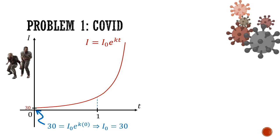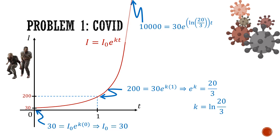After one week, we have 200 cases. So if we sub in i equals 200 and t equals 1, we can find that e to the power of k gives us 20 over 3. So turning this exponential equation into a logarithmic equation, we will find that k equals ln 20 over 3. So we need to find out how long it takes for 10,000 cases. So let's extrapolate the graph.